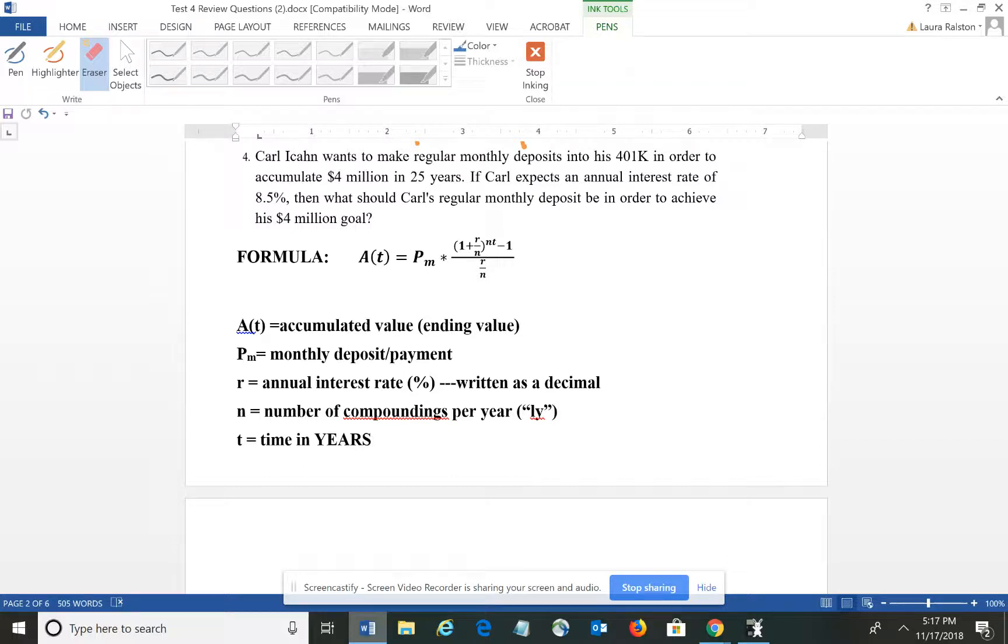The first thing that I want to do is identify all of the different pieces for this problem. So if I go through and read the question, it says Carl wants to make regular monthly deposits and accumulate $4 million. So my accumulated value is $4 million in 25 years. He expects an interest rate of 8.5 percent.